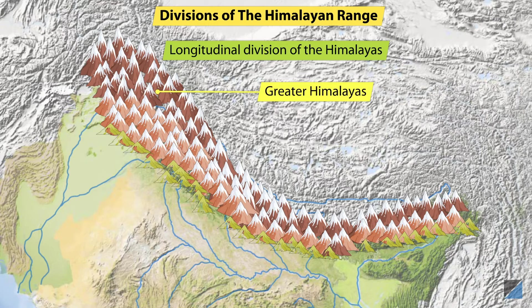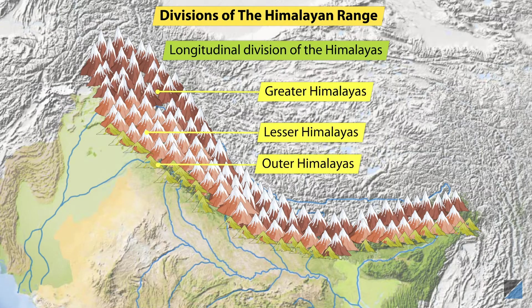These are the Greater Himalayas or the Inner Himalayas, the Middle Range called the Lesser Himalayas, and the Outermost Range called the Outer Himalayas.